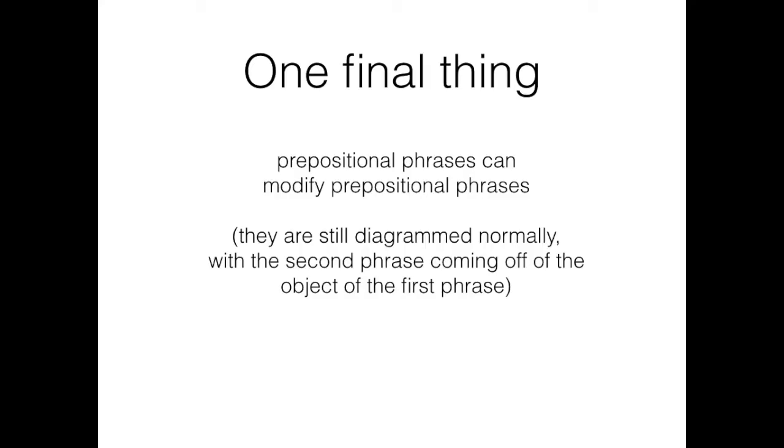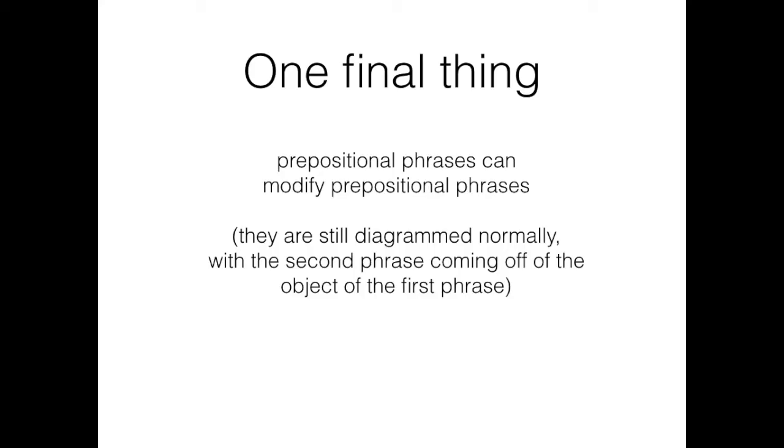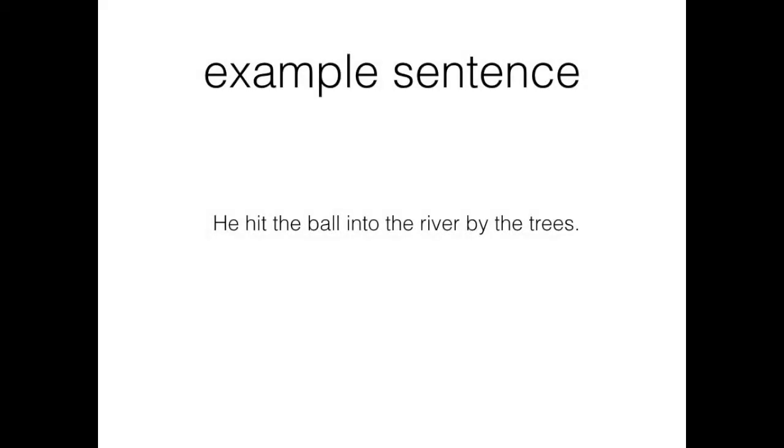All right, final thing. If a prepositional phrase modifies another prepositional phrase, you diagram the first phrase like usual, modifying either a noun or a verb, and then diagram the second phrase coming off of the object of that first phrase. Our example sentence is something like 'He hit the ball into the river by the trees.' I want you to see if you can diagram this one first without me, so pause the video now and try it, and then skip ahead to see if you got it.